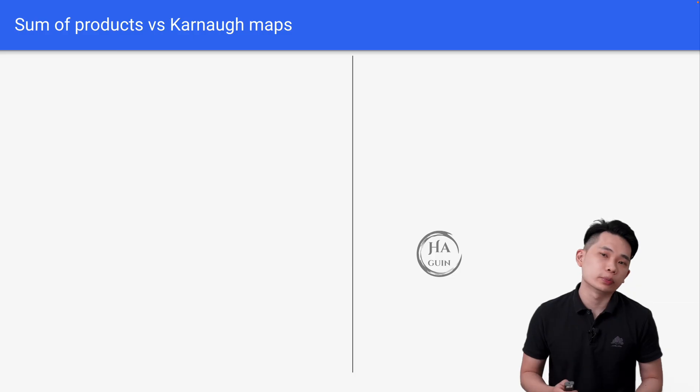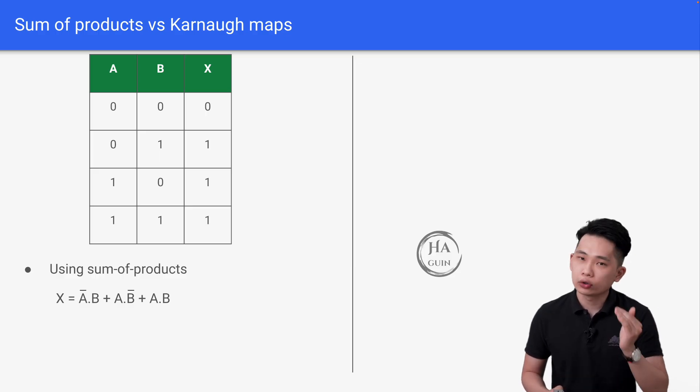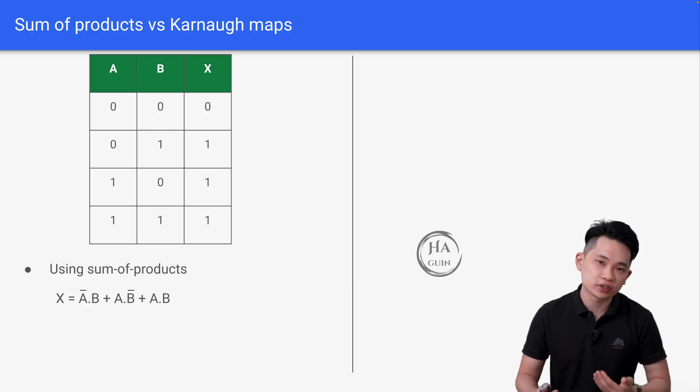Let's look at the difference between sum of products and Karnaugh maps to understand better. Let's look at this truth table here. By using sum of products, we will get X equals not A dot B plus A dot not B plus A dot B. It's pretty straightforward. We are just forming the equation based on the combinations that result in one in the truth table.